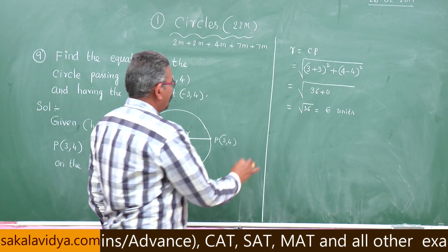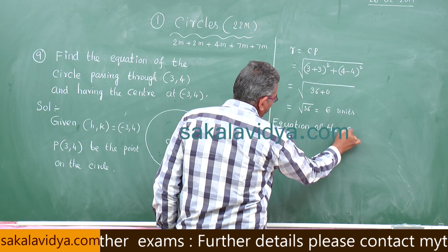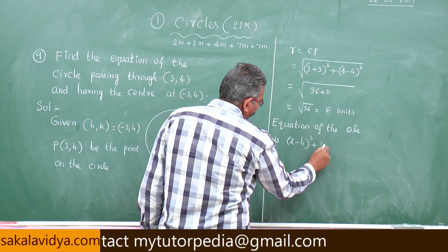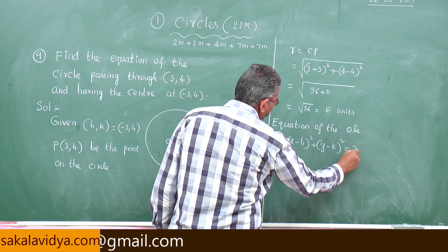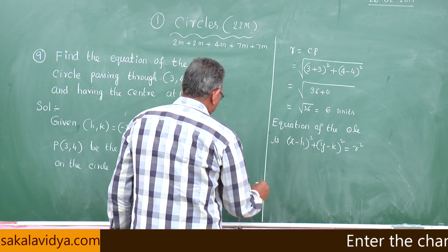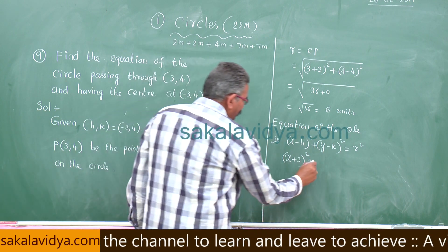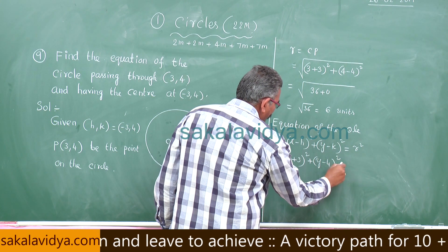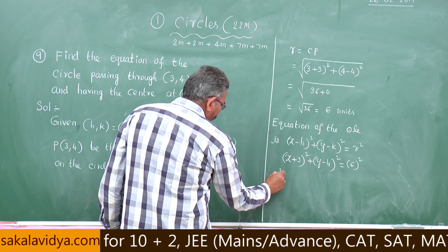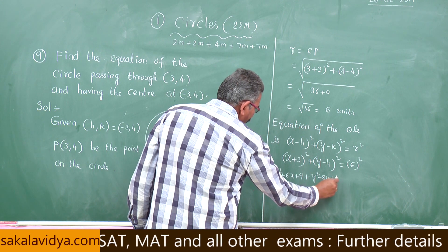Now the equation of the circle is x minus h whole square plus y minus k whole square equal to r square. Since h is minus 3, k is 4, and radius is 6, substituting we get x minus of minus 3, that is x plus 3 whole square plus y minus 4 whole square is equal to 6 square. Let us simplify: x square plus 6x plus 9 plus y square minus 8y plus 16 equals 36.